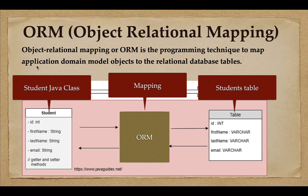The application domain model here means basically a Java class with some fields and getter/setter methods. For example, a Student Java class has fields like id, first name, last name, and email. On the other hand, a students relational database table has columns like id, first name, last name, and email. ORM basically maps the fields from the Student Java class with the columns from the students database table — for example, id, first name, last name, and email are directly mapped.